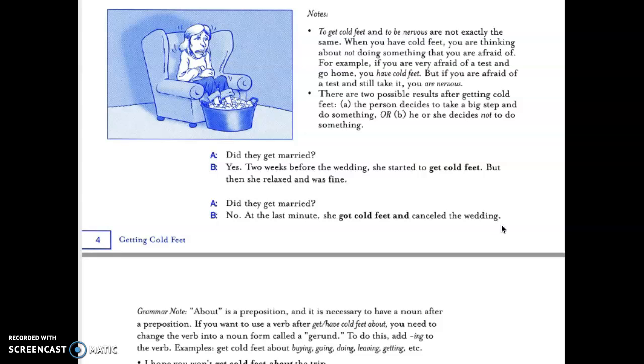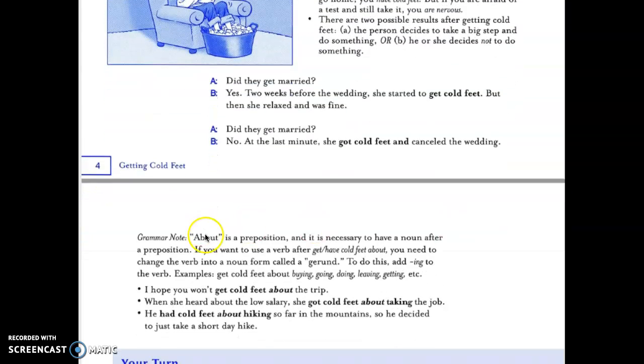About is a preposition and it is necessary to have a noun after a preposition. If you want to use a verb after 'get' or 'have cold feet about,' you need to change the verb into a noun form called a gerund. That means adding -ing to the verb. Examples: get cold feet about buying, about going, about doing, about living, about getting. I hope you won't get cold feet about the trip.